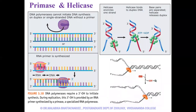The polymerase cannot initiate DNA synthesis on a duplex DNA or on a single-stranded DNA. So it needs a primer. The primer provides the three prime end and the template provides the bases to be copied, and then only the polymerase can initiate polymerization. Only when we have an RNA primer can the DNA polymerase proceed with the three prime end of the RNA primer. Then we studied the single-stranded binding proteins, the SSB proteins, and the helicases.